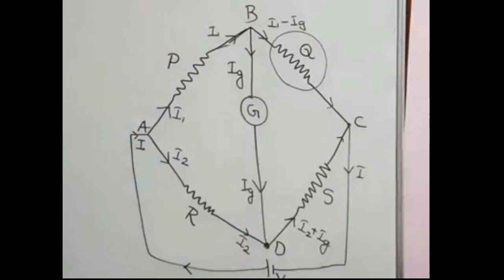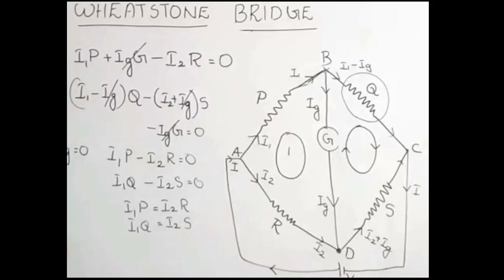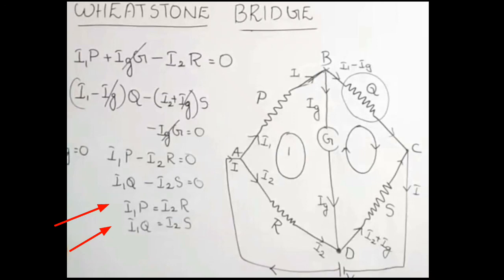When the Wheatstone Bridge is balanced, the galvanometer current IG equals zero. Setting IG to zero in both equations simplifies them. The first equation becomes: I1·P − I2·R = 0, so I1·P = I2·R. The second equation becomes: I1·Q − I2·S = 0, so I1·Q = I2·S.